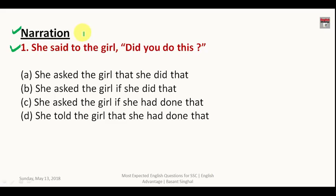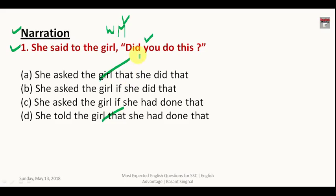The question is: 'She said to the girl, did you do this?' There are two kinds of questions — Wh-questions and yes/no questions. This belongs to the yes/no question category, so we always use 'if'. Since this sentence is written in past simple tense, you have to change it into past perfect.